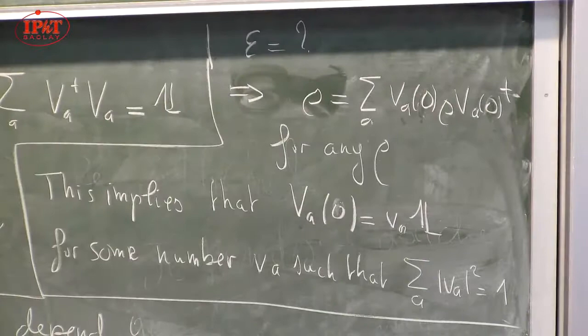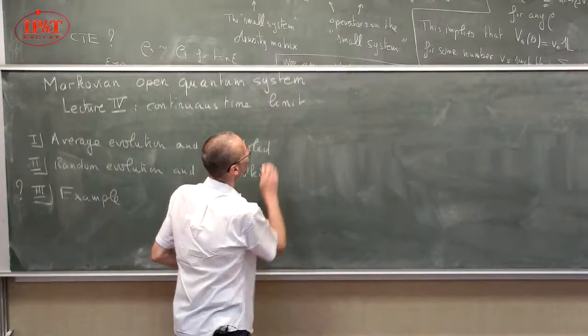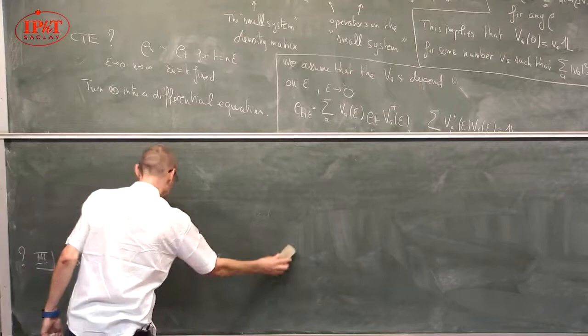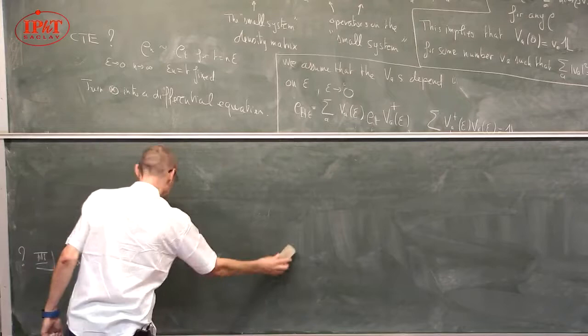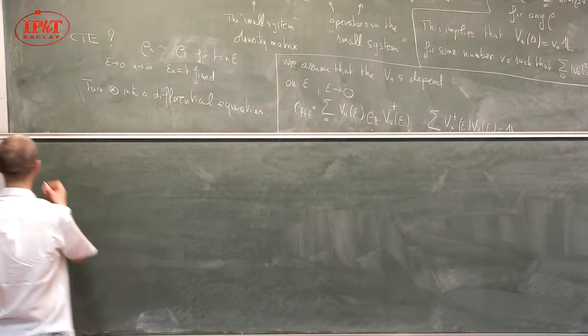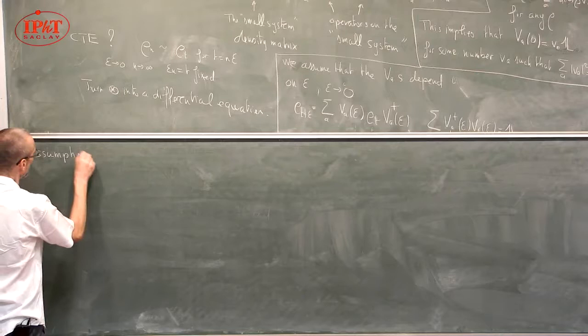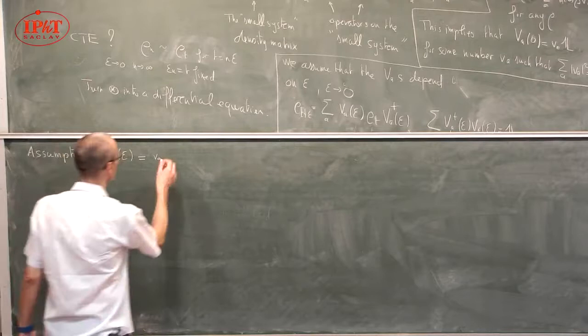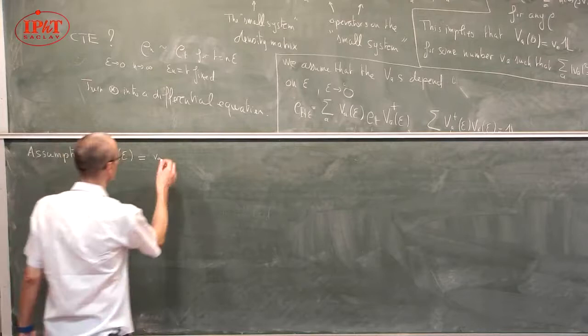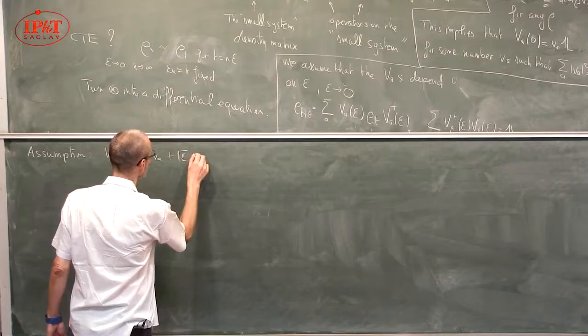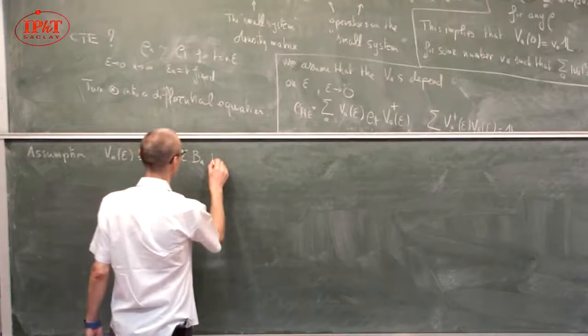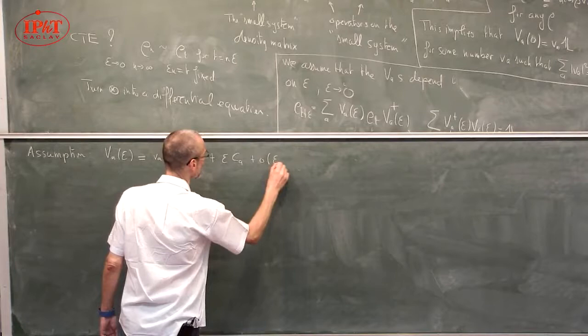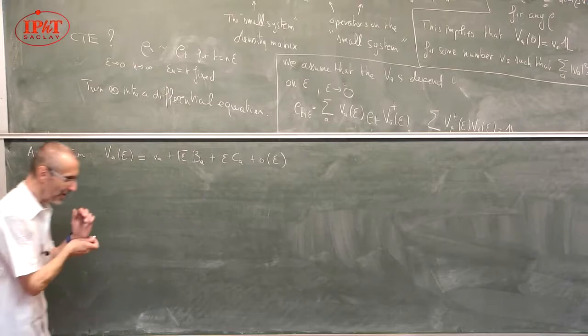Now comes an assumption — I will explain later why it is reasonable. The assumption is that V_A(epsilon) starts with little v_A, and then has operators B_A at order square root of epsilon, and operators C_A at order epsilon, plus little-o of epsilon. This looks arbitrary, but I will show it is the only reasonable thing to do.